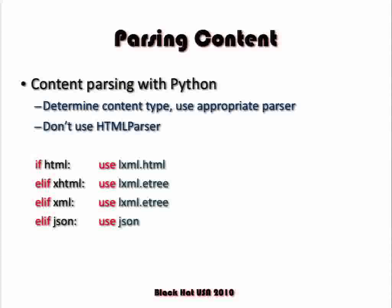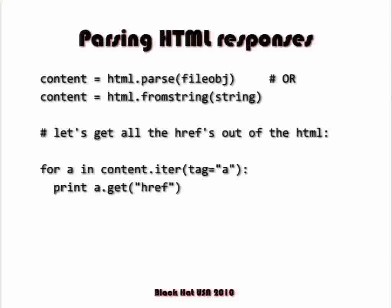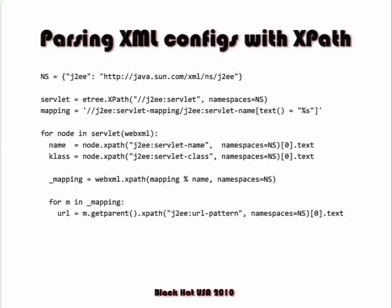The library for parsing JSON is, unsurprisingly, the json module. The web is broken just a touch, so Python's html.parser will break horribly on real-world content. Parsing HTML and iterating over every link in a document is as simple as iterating over every anchor tag and getting the href attribute — literally three lines of code. XML parsing is really useful for code reviews — like parsing web.xml files to get servlet names, classes, and URL patterns, then dumping it into a spreadsheet to track testing progress using XPath expressions.